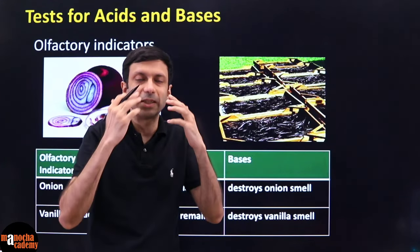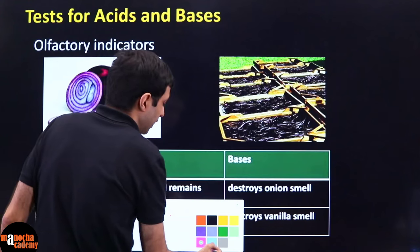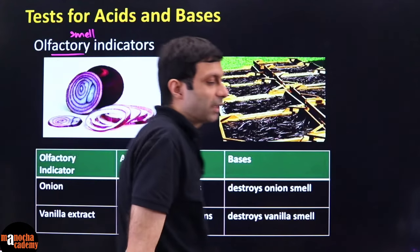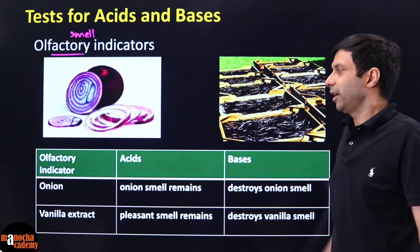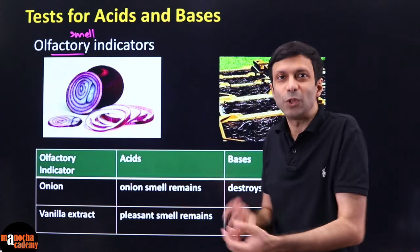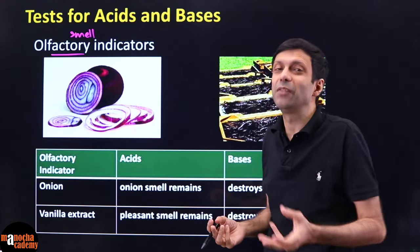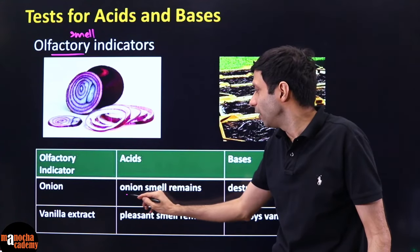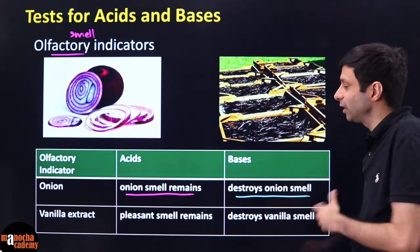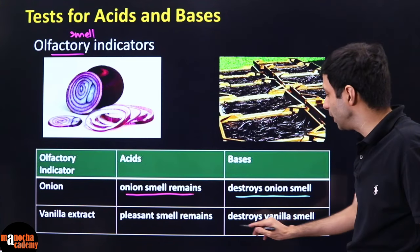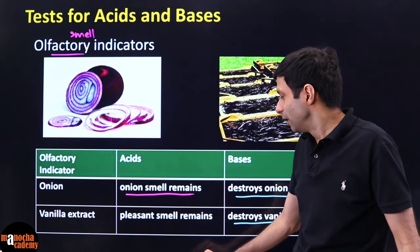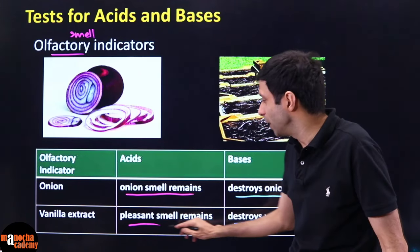You can also have olfactory indicators — olfactory refers to our sense of smell, so these are smell indicators. For example, in acids the onion smell remains — you can remember this because in restaurants they put onion in vinegar. For bases, the onion smell disappears. Similarly, bases destroy the vanilla smell, but for acids the pleasant vanilla smell remains.